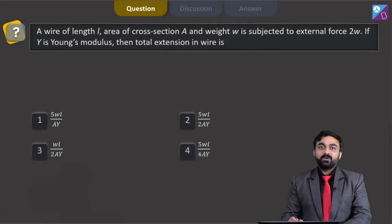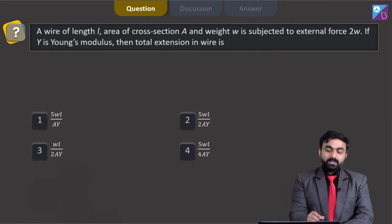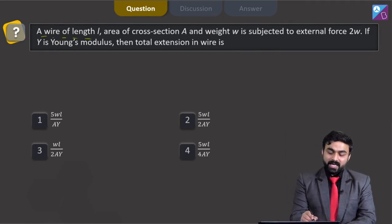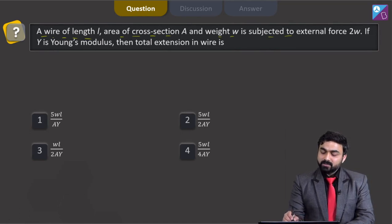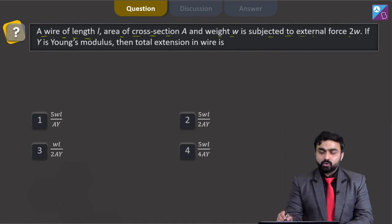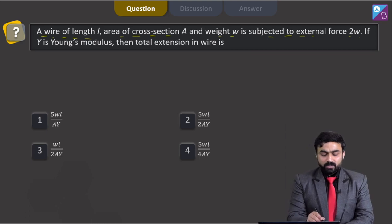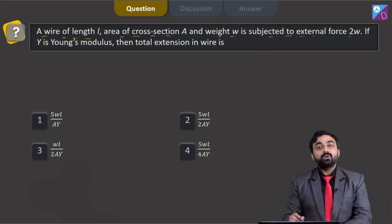Hello dear students, let's check out this particular question now. In this question, a wire of length L, area of cross section A and weight W is subjected to external force 2W. If Y is Young's modulus, then total extension of wire is.